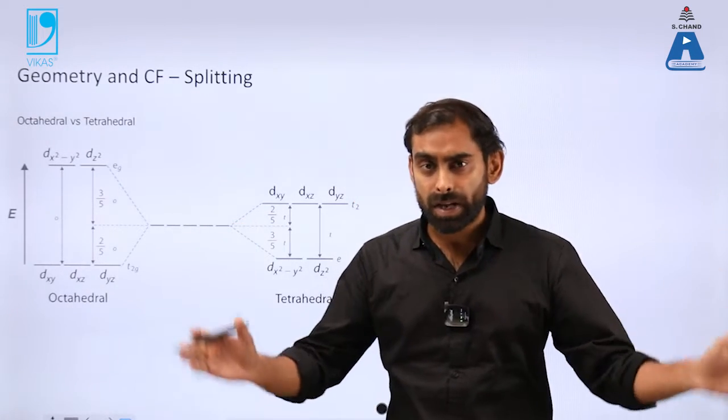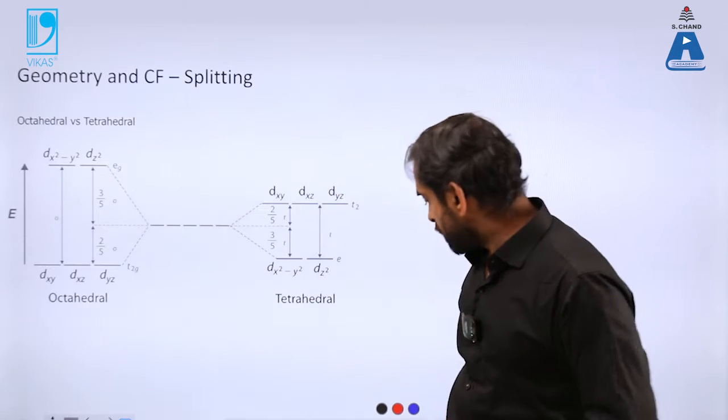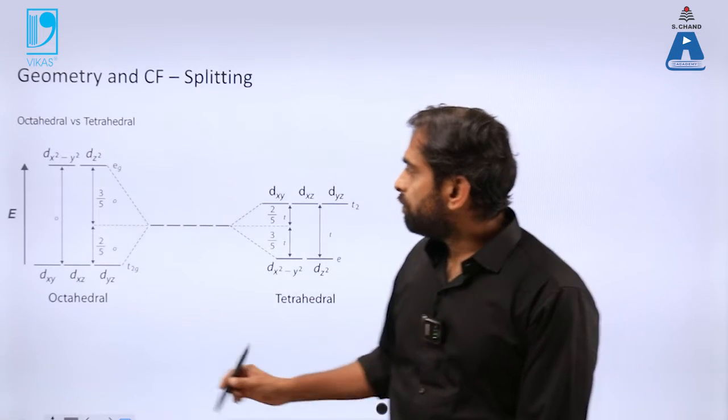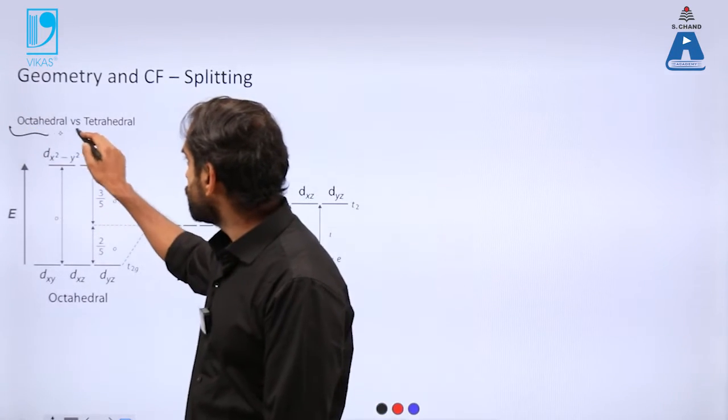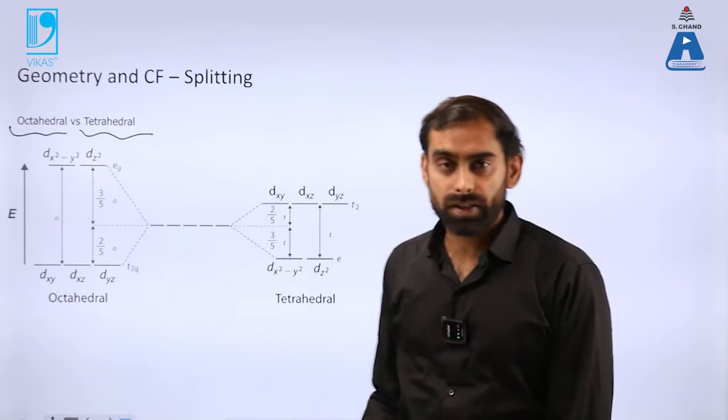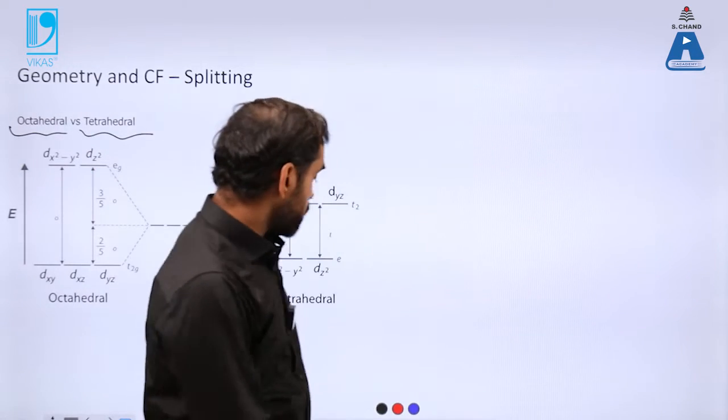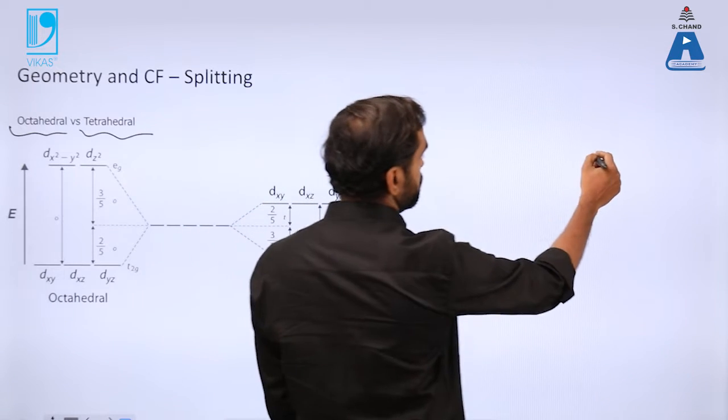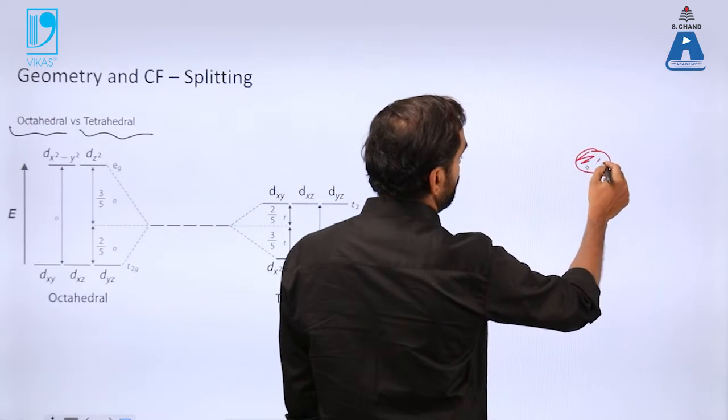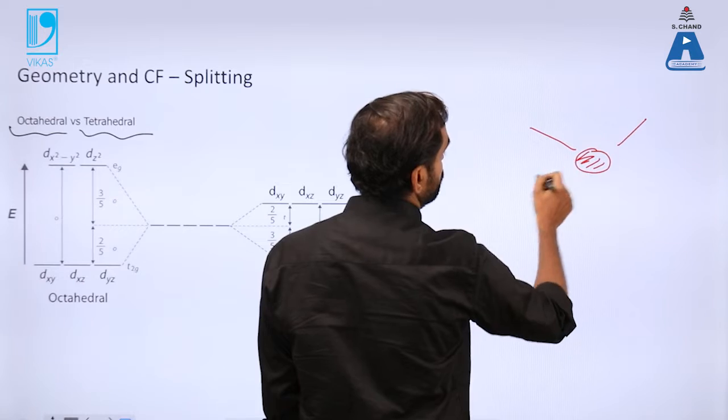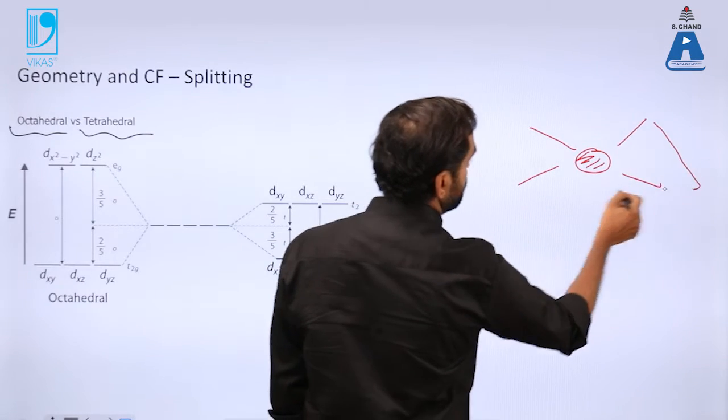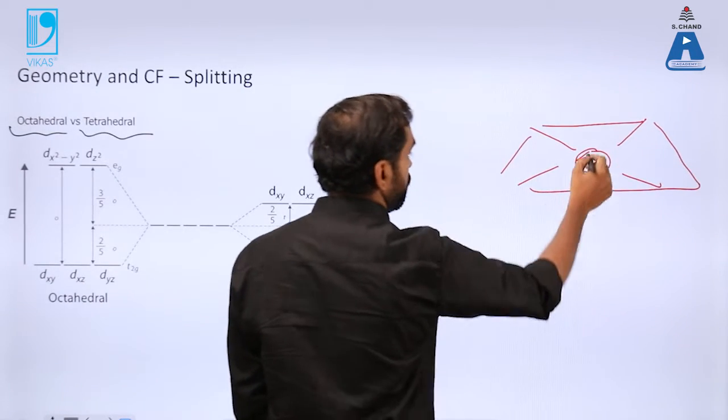One is called octahedral geometry, another one is called tetrahedral geometry. So the difference between octahedral and tetrahedral is that suppose it is a metal ion and you have one, two, three, four things in a plane, one above the plane and one below the plane.